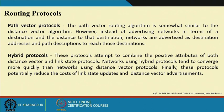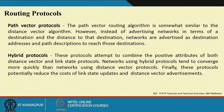The hybrid protocol attempts to combine positive attributes of both distance vector and link state. Networks using hybrid protocols tend to converge more quickly, but maintaining both types requires more hardware or resource support. In most cases, it is useful in more controlled or proprietary environments. These protocols potentially reduce the cost of link state updates and distance vector advertisements and try to have an optimized path.